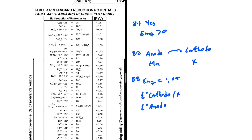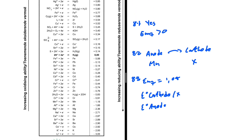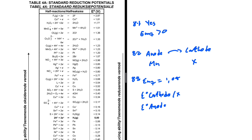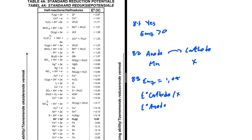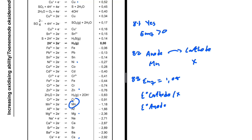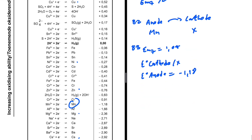We can use Table 4A or Table 4B — there's no real difference. Looking up Mn in the table of standard reduction potentials, we find that the reduction potential at the anode for Mn is minus 1.18 volts.